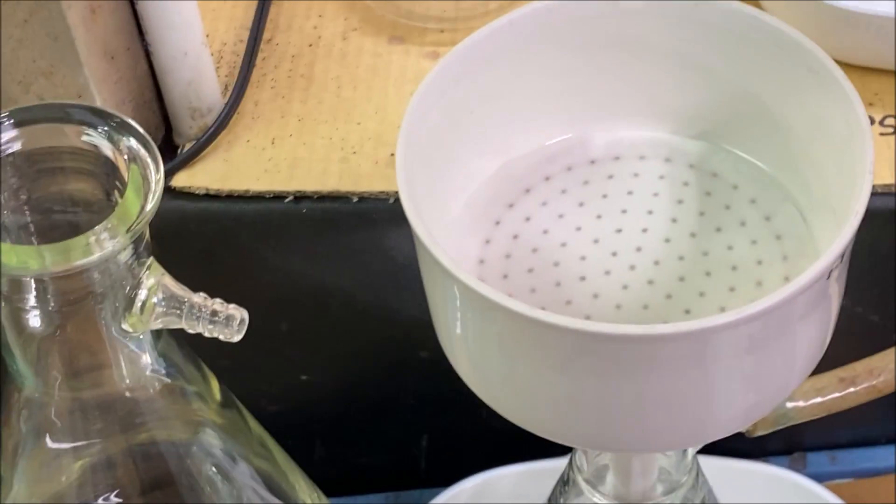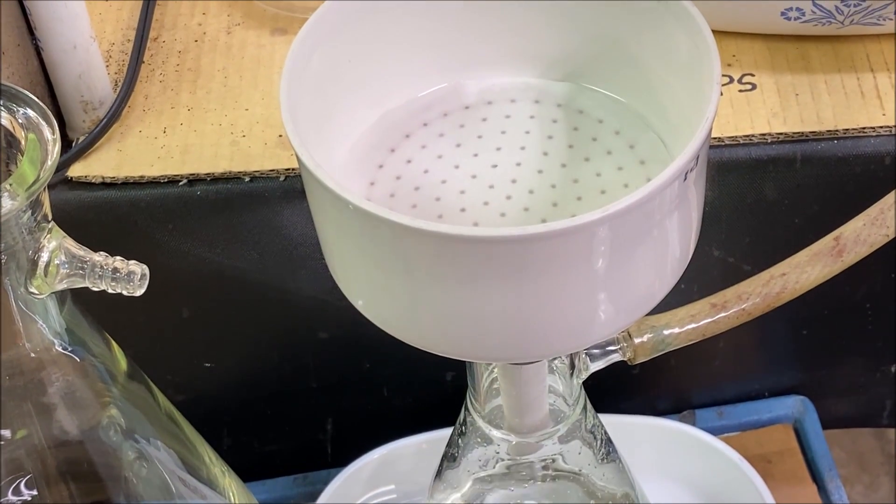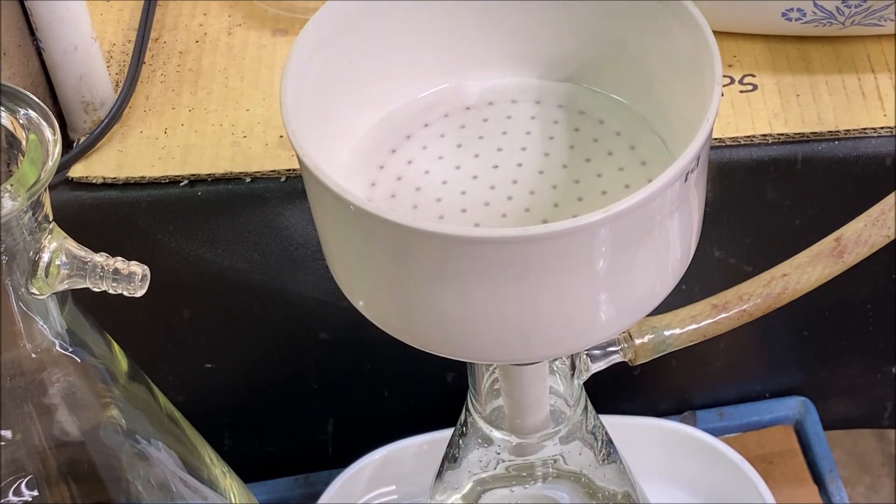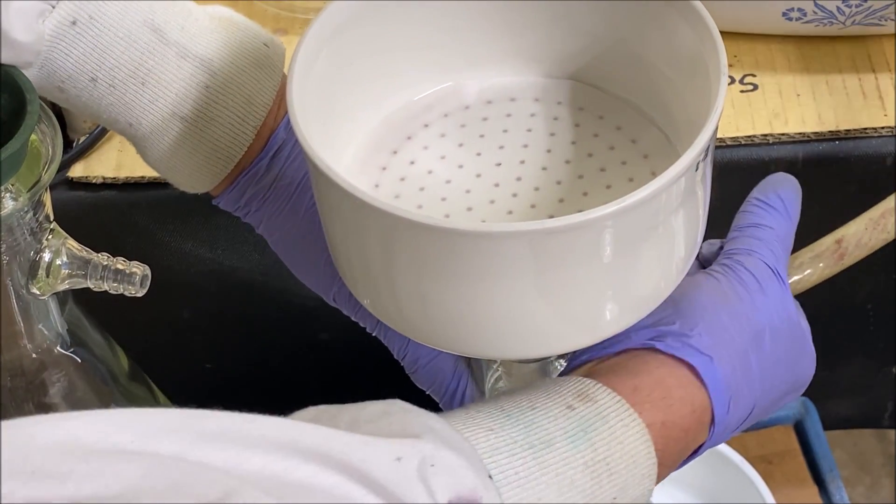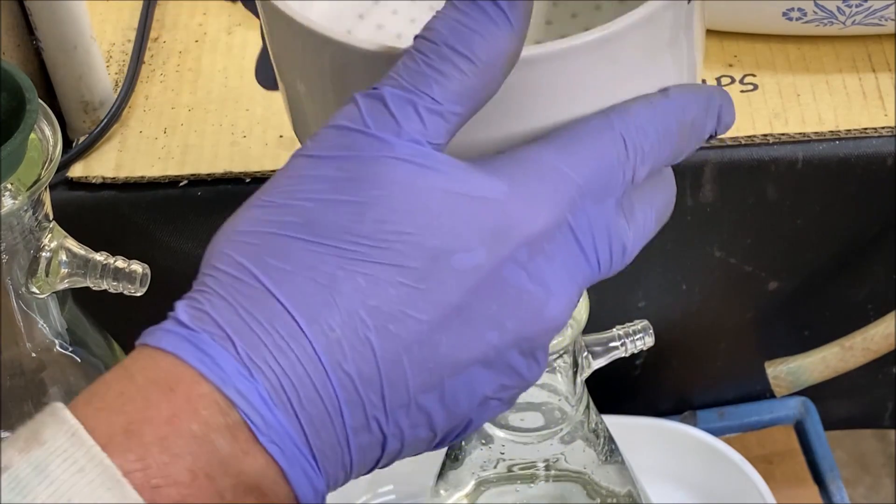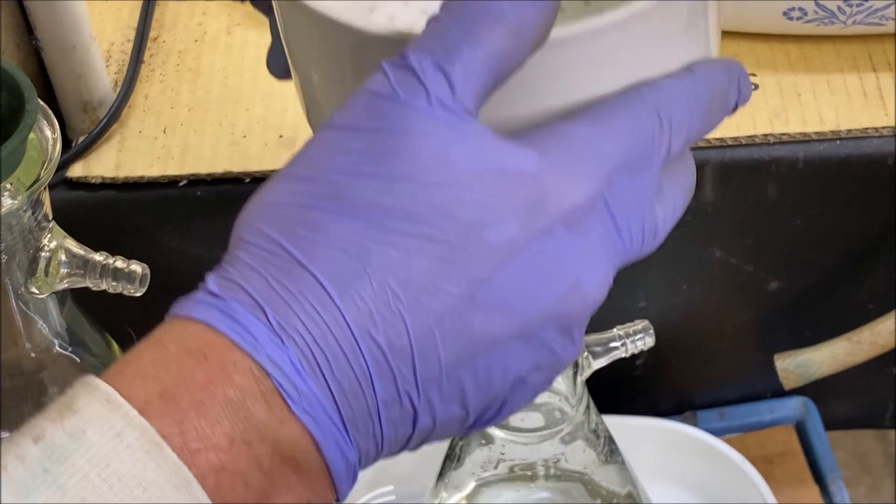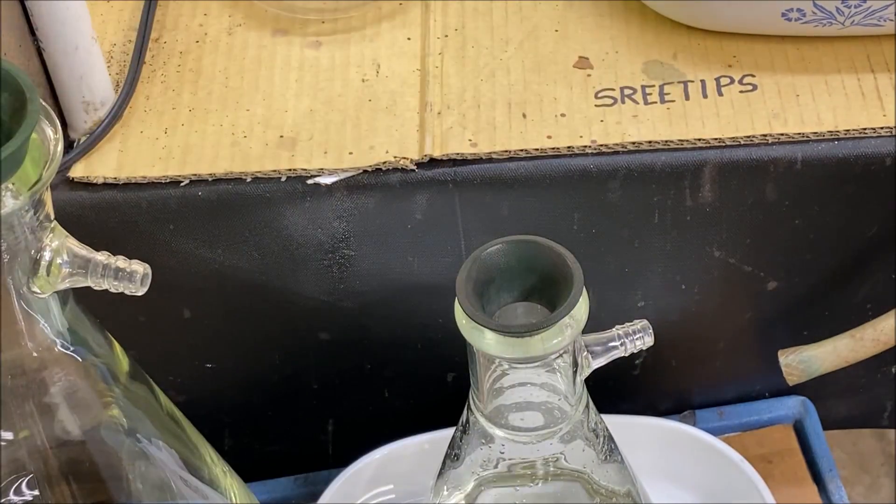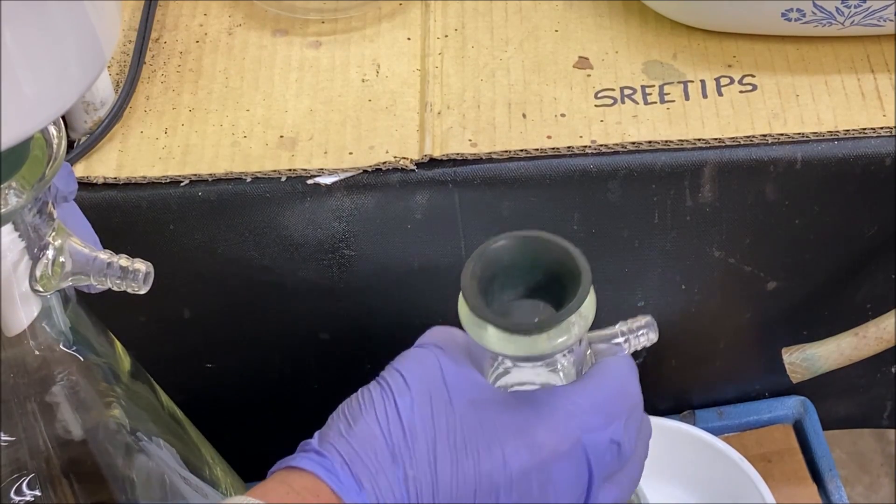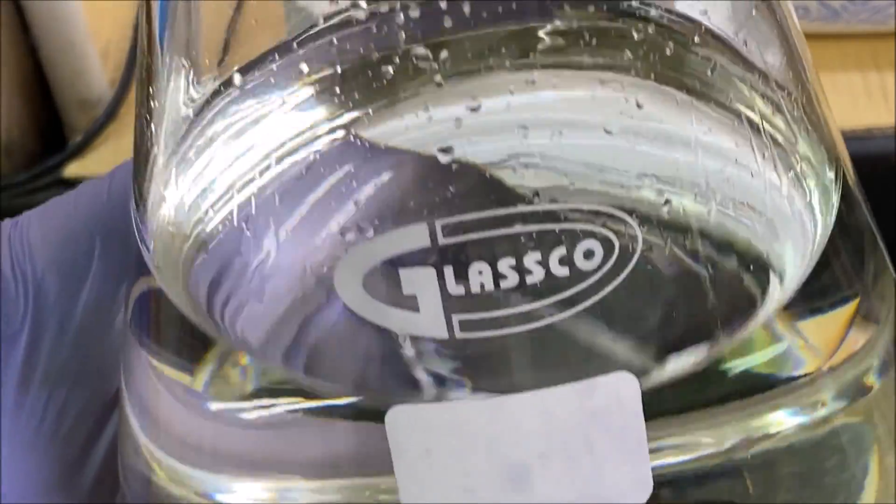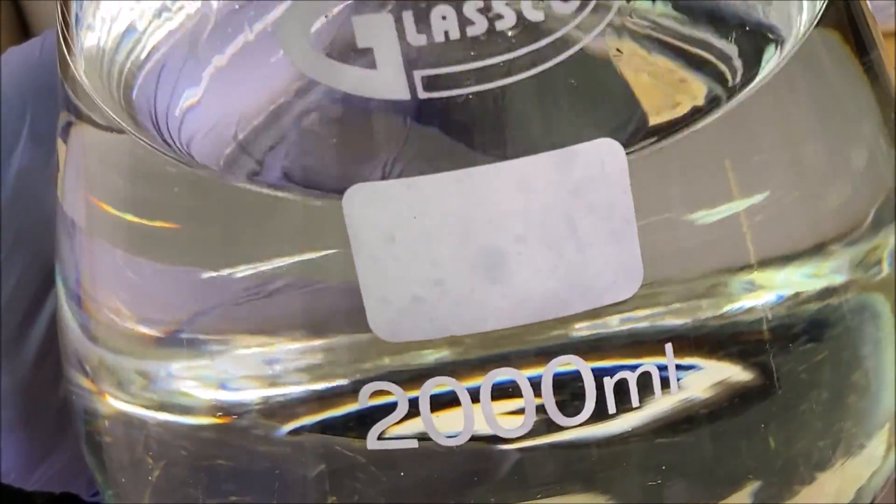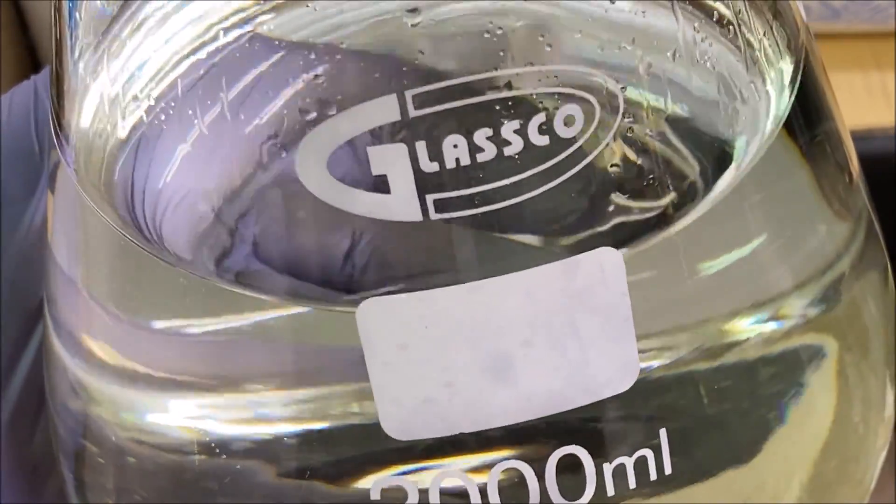We're all done with this filtering, so now what I'm going to do is take the filter off, and we're going to transfer it over here to another flask. This is about 1,100 grams of pure silver in about two liters of solution.